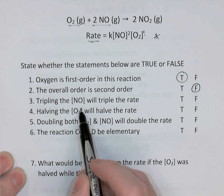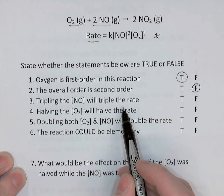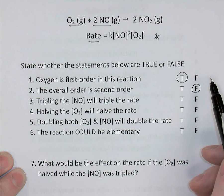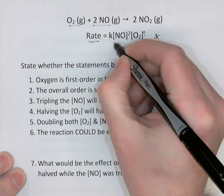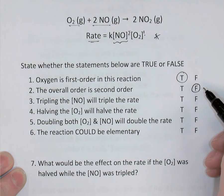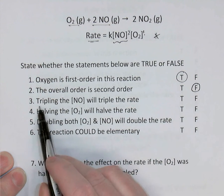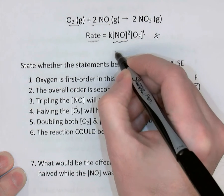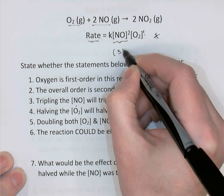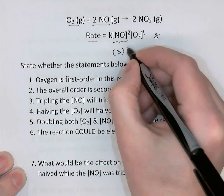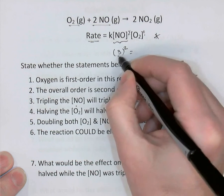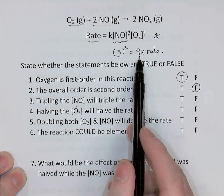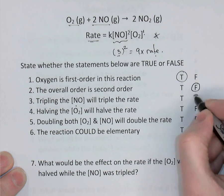The third statement says tripling the nitrogen monoxide concentration would triple the reaction's rate. Notice that NO's concentration is raised to the power of 2 — it's second order in NO. If we triple the NO concentration, we take the change we're applying, tripling it, and raise that to the power of its order, 2. So 3 squared gives 9 times the rate. Tripling NO results in 9 times the rate, not tripling it — false.